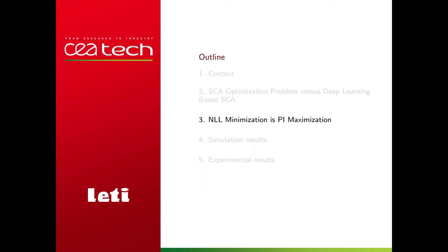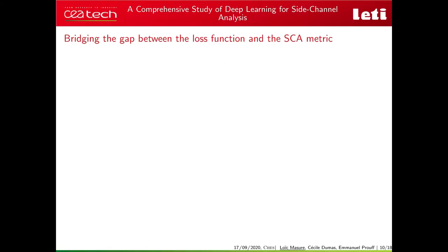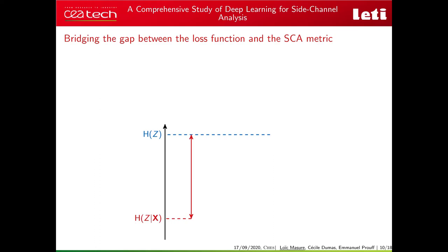In particular, we suggest using a loss function known as the negative log-likelihood (NLL). To make the link between the loss function and our SCA metric, consider the entropy of the sensitive random variable Z — typically known and uniform. Since observations of X give information about Z, this entropy decreases to the conditional entropy of Z given X. The gap between these quantities is the mutual information (MI) between Z and X. At CHESS 2019, Chérisey and Guilley emphasized that this MI is linked to a ratio involving NA* and the threshold β.